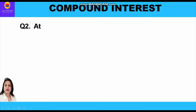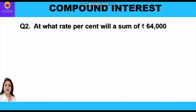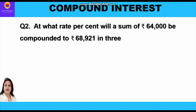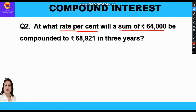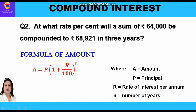Now let us take up the second question. At what rate percent will a sum of rupees 64,000 be compounded to rupees 68,921 in 3 years? This question is also similar to the previous one — we have to find the rate percent per annum. Rupees 64,000 is the principal, rupees 68,921 is the amount, and time period is 3 years. We shall use the formula A is equal to P in bracket 1 plus r upon 100, whole raise to power n.